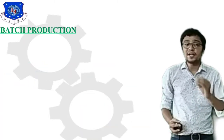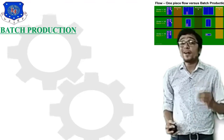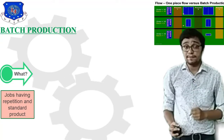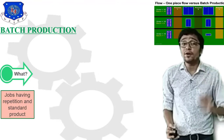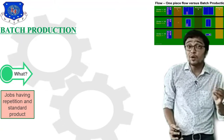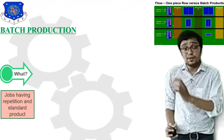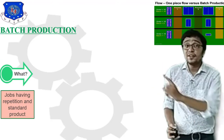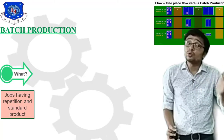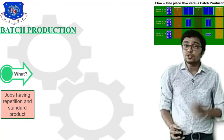Moving forward to Batch type production — what is the difference between Job type and Batch type production? In Batch type production, a set of jobs completes process number 1, then all are forwarded to process number 2, and after completion forwarded to process number 3. This cycle is Batch type production. The quantity varies from 2 to 10, whereas in Job type production it is only one.